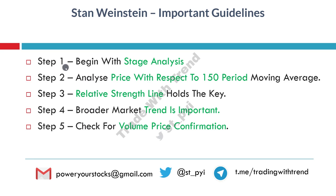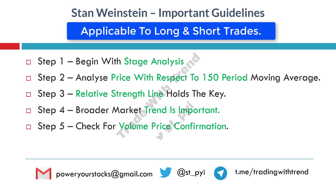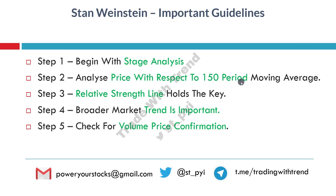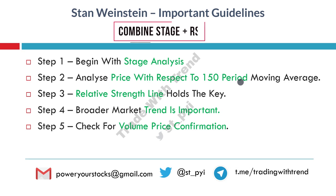Step one: always begin with stage analysis of the stock. Clearly mark out stages on the chart — take long trades in stage two and short trades only in stage four. Step two: use the 150-period moving average to check the direction of trend. Take long trades when price is above the 150-period moving average and short trades only when price is below it.